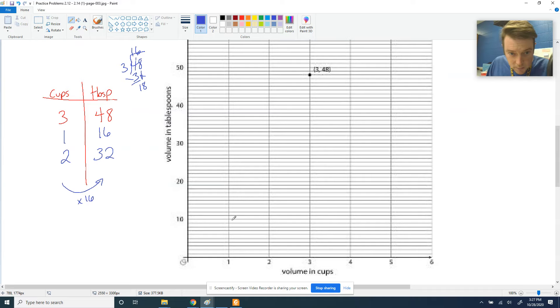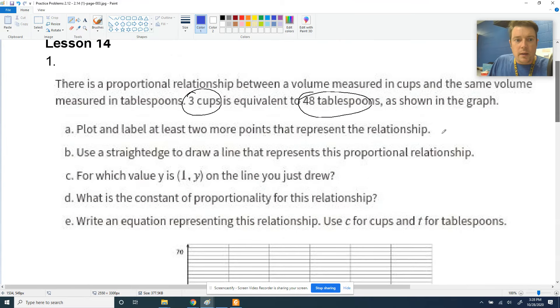Okay, so 1 and 16. Here's 10, 11, 12, 13, 14, 15, 16. That dot's going to pop up. And 2, 32. Here's 30, 1 and 2. Those two dots should show up. So it says plot and label, I believe. So I'm going to label this one as 2, 32, and this one as 1 and 16. So I've plotted the two extra points that I found with my constant. Plot and label at least two more, check.